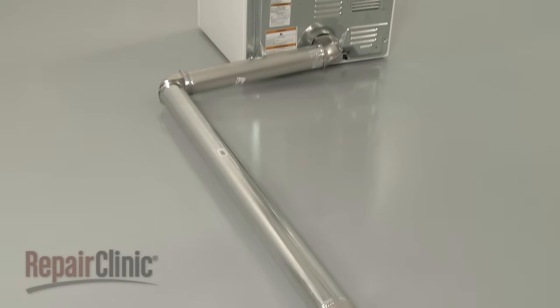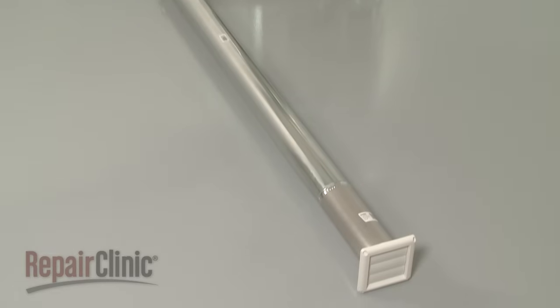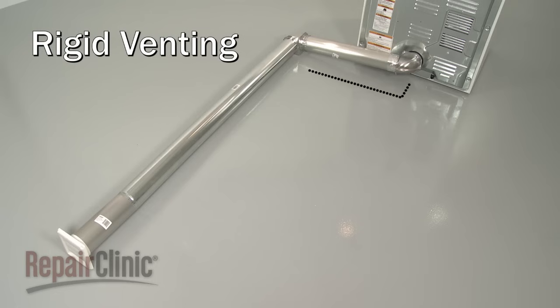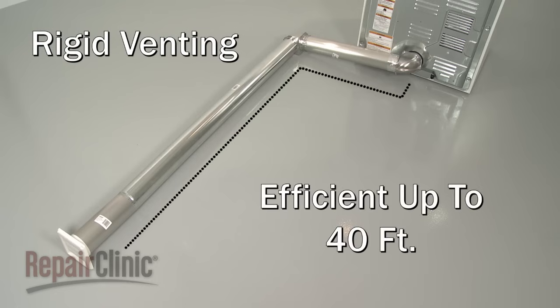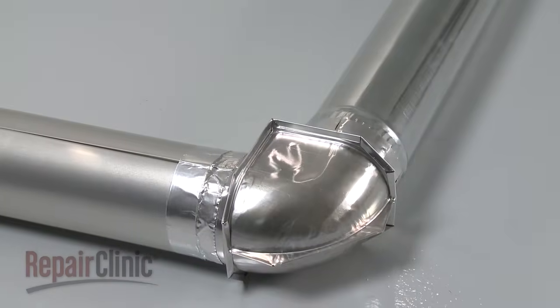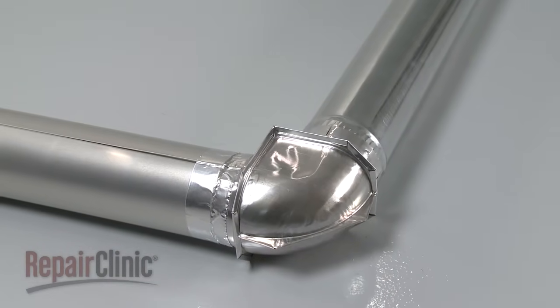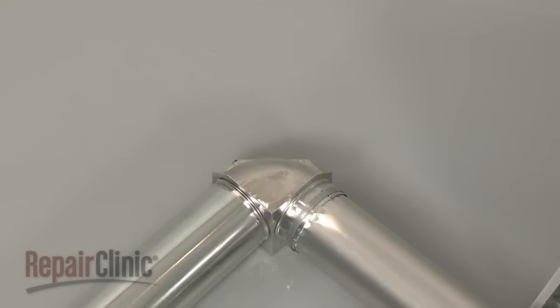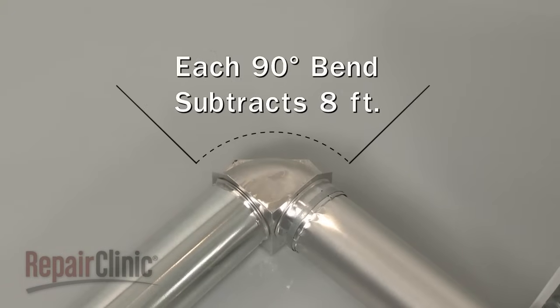There are two types of venting material that can be used. Each has a different length limit. The best type to use is rigid venting, which is usually efficient up to 40 feet in length. However, be aware that any bend in the venting impedes air flow and reduces the length limit for efficient operation. For example, each 90-degree bend subtracts 8 feet from that 40-foot limit.